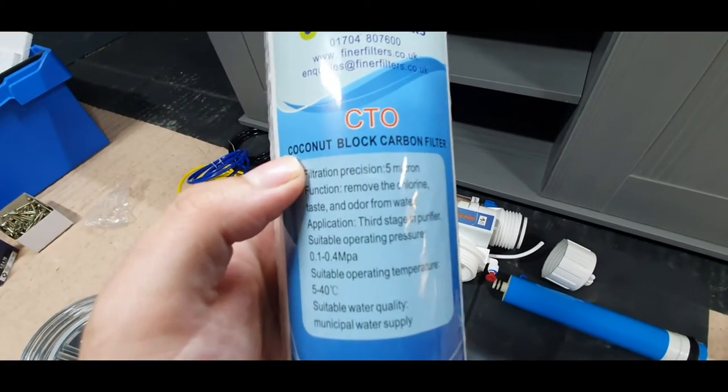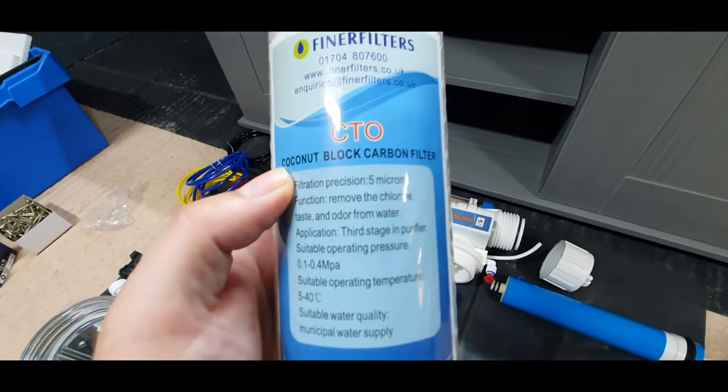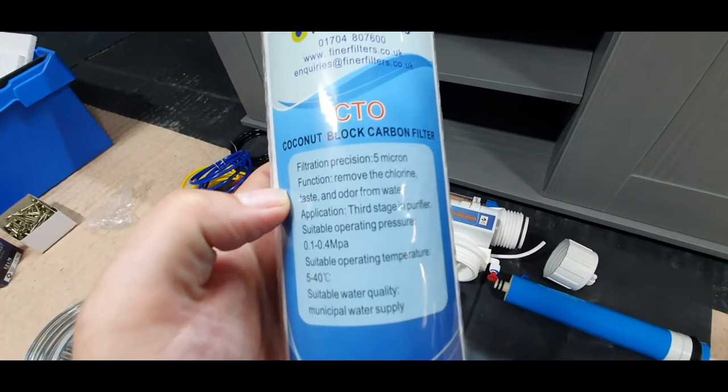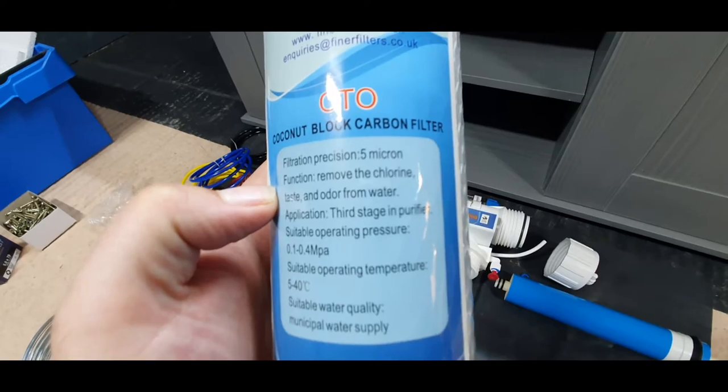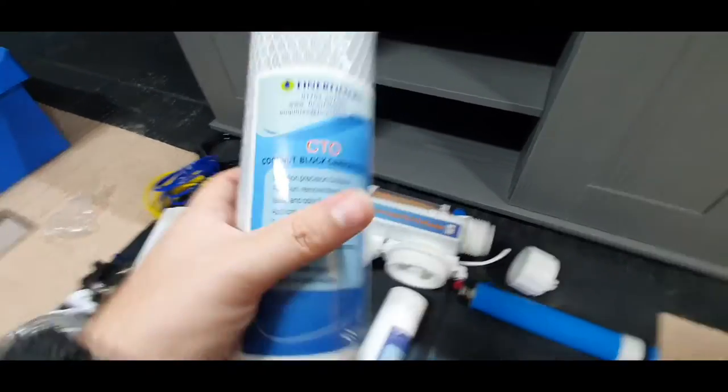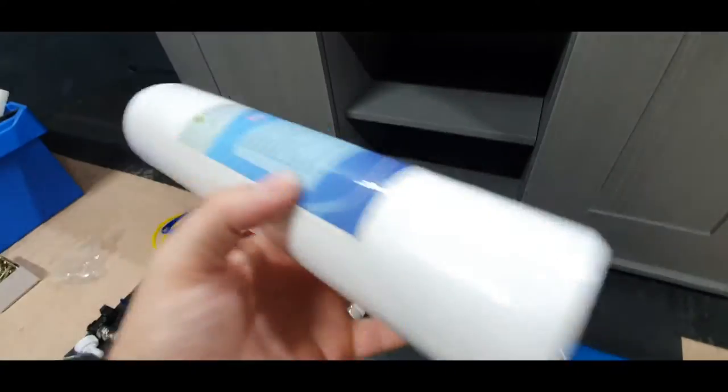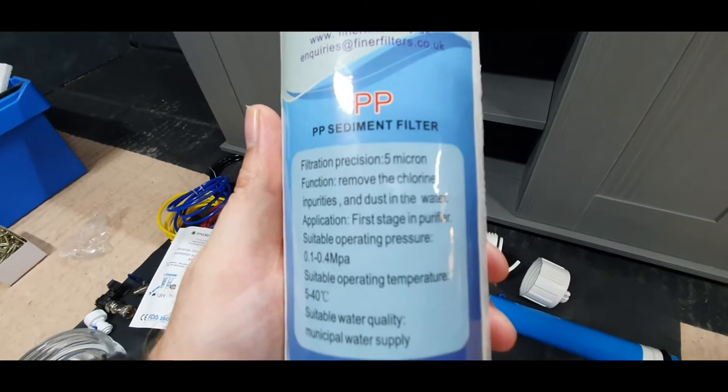We can see here that the carbon in this unit is made from coconut, which is quite a common thing to use for carbon in most industries. The filtration is 5 micron, removes chlorine, taste, and odor from the water.